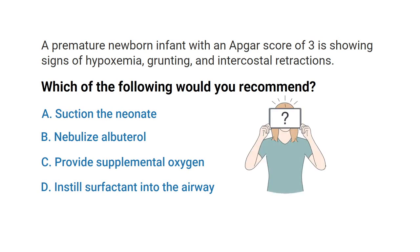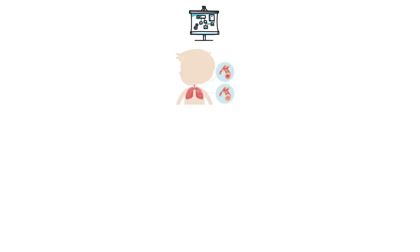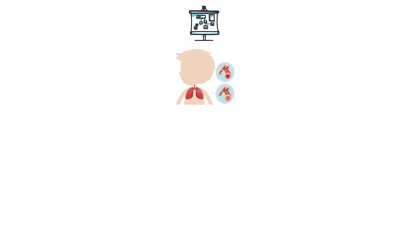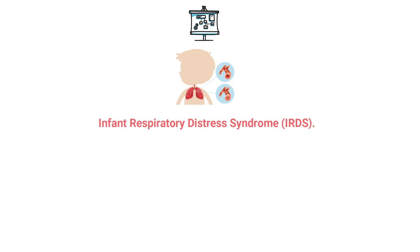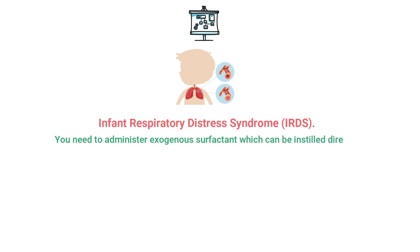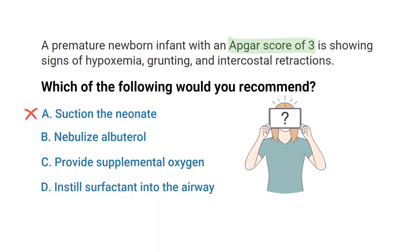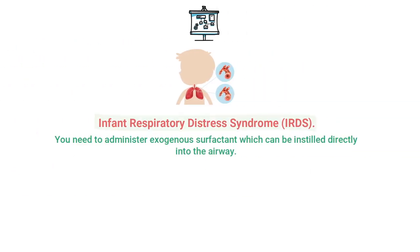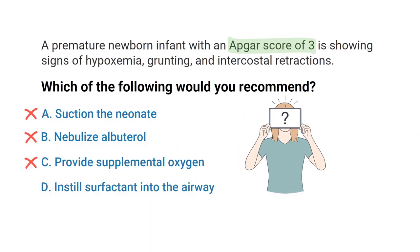This infant is showing signs of severe respiratory distress, and an extremely low Apgar score of 3 tells us the neonate most likely has infant respiratory distress syndrome. To improve the infant's condition, you need to administer exogenous surfactant, which can be instilled directly into the airway. There are no indications for suctioning, and albuterol is not indicated. Although supplemental oxygen may help with hypoxemia, in this case with severe respiratory distress more extensive measures are needed. The correct answer is D — instill surfactant into the airway.